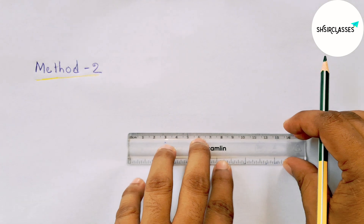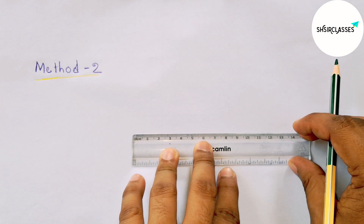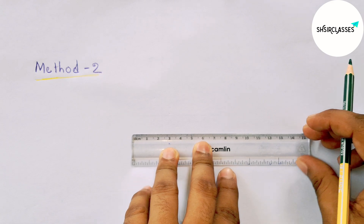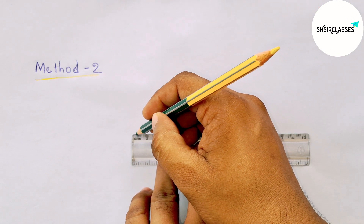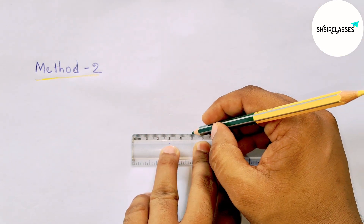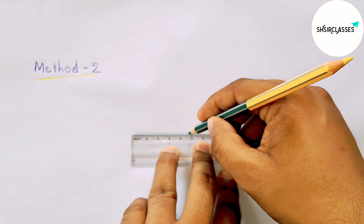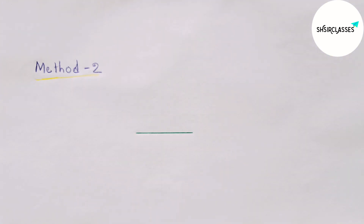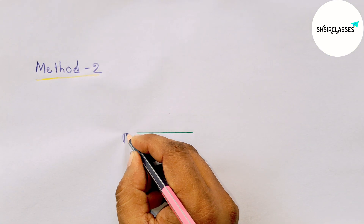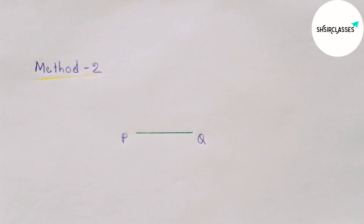Next, using method number two to draw a parallel line. Drawing a line segment of length 5 centimeters, which meets the line segment PQ at a point. Labeling points A, B, P, and Q.